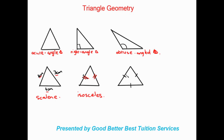Here we can see that all three sides are equal, and when we deal with a triangle where all three sides are equal we call this an equilateral triangle.